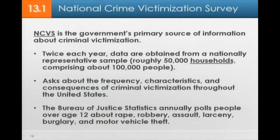The NCVS is the government's primary source of information. Twice each year, data are obtained from a nationally representative sample — roughly 50,000 households and roughly 100,000 people. They ask about the frequency, characteristics, and consequences of criminal victimization. The Bureau of Justice Statistics, or BJS, annually polls people over the age of 12 about rape, robbery, assault, larceny, burglary, and motor vehicle theft. Within the parameters of what they are requesting information about, these are good data.